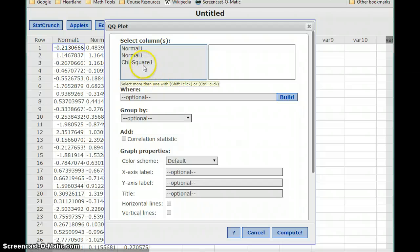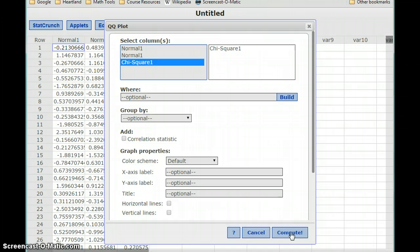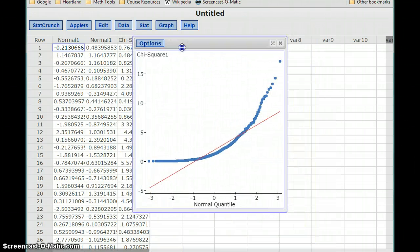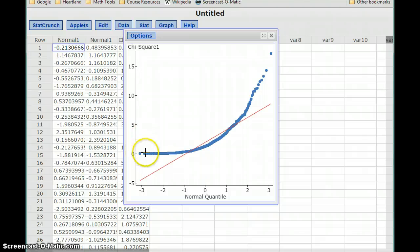So when we construct this QQ plot, we should see some values that are very different from that straight line pattern. And in this case, it's pretty easy to see that. What we have is more of this curve, kind of a parabola shape, that obviously isn't matching up very well with that straight line pattern.